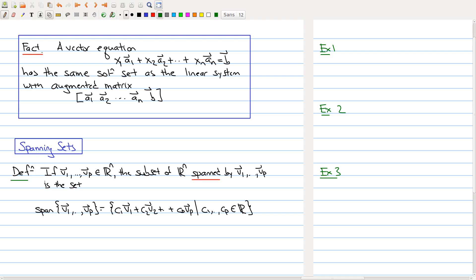The definition is written here and let me walk you through it. If v1 through vp are a collection of vectors in Rn, the subset of Rn spanned by those vectors is the following set. On the left hand is the way we define our set. The span of v1 through vp is shorthand for the collection of elements on the second side.